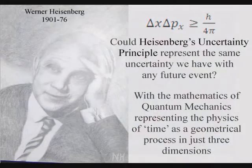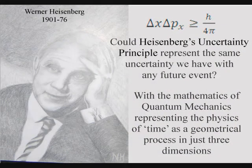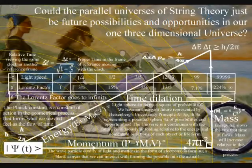This can be seen mathematically with Heisenberg's uncertainty principle of quantum mechanics representing the uncertainty of everyday life at the smallest scale of this process.